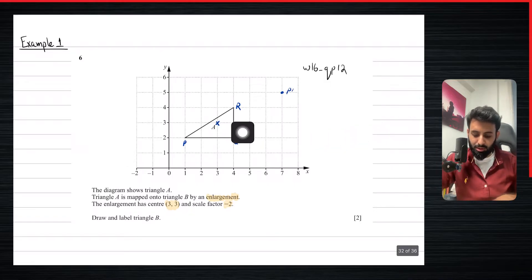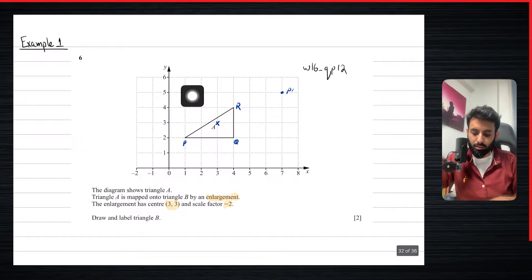Now let's do the same for Q. So Q is 1 unit to the right and 1 unit down. So here we go again, 1 right, 1 down. So now it's going to be double, but it's going to be in the opposite direction. So 1, 2, 2 to the left and 2 up. There you go. Here's Q prime.